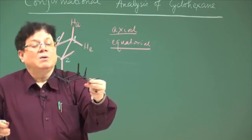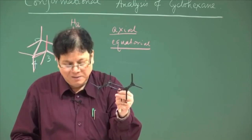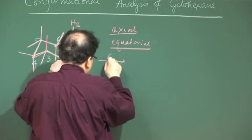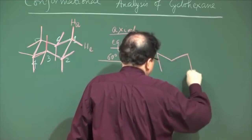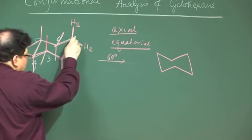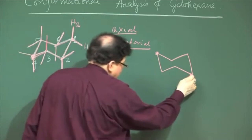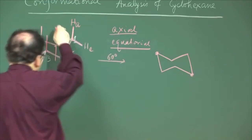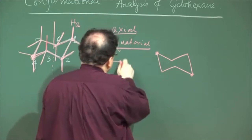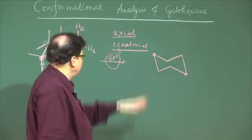Having identified the axial and equatorial positions and how to write them, we now address drawing the chair form. Some students find this difficult and draw deformed chairs. A method published in the Journal of Chemical Education suggests taking four points at equal distance in a line, placing one point above the second and one below the third, then joining all to get a chair form.